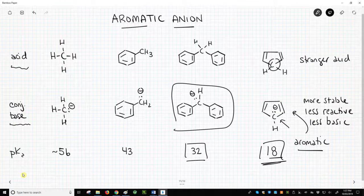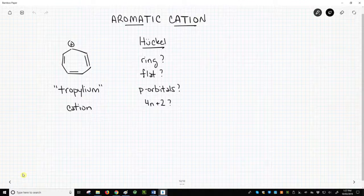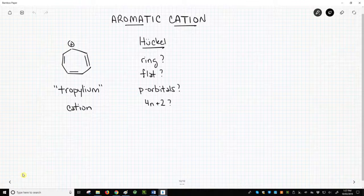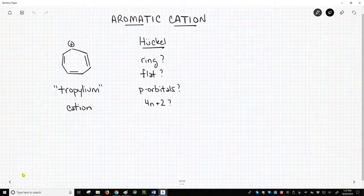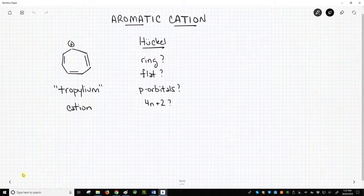Let's see another aromatic ion. On the screen is a special cation called the tropylium cation. It is not often encountered in synthetic chemistry, but it is remarkably stable as a cation because it is aromatic.